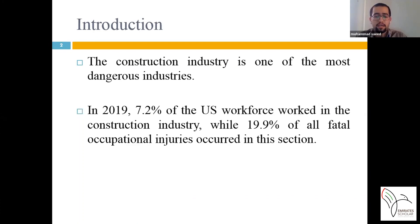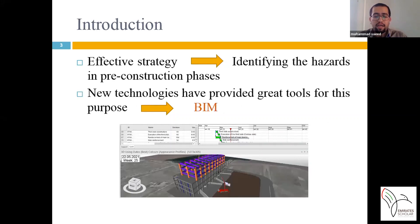Unfortunately, the number of casualties and fatalities in the construction industry is disproportionately high. While the construction industry employed 7.2% of the US workforce in 2019, 19.9% of all fatal occupational injuries occur in this sector. So it's very important to pay attention to increasing the safety level in construction projects. One appropriate strategy is to identify hazards in the pre-construction phase and try to eliminate, reduce, or manage them and their impacts.